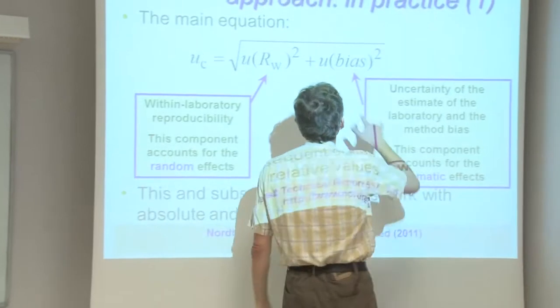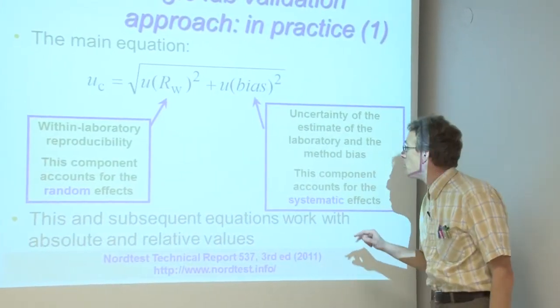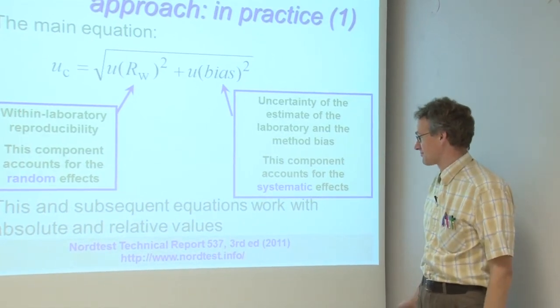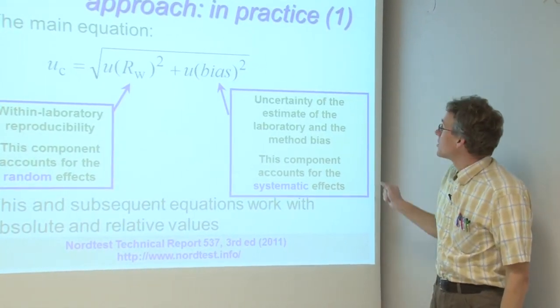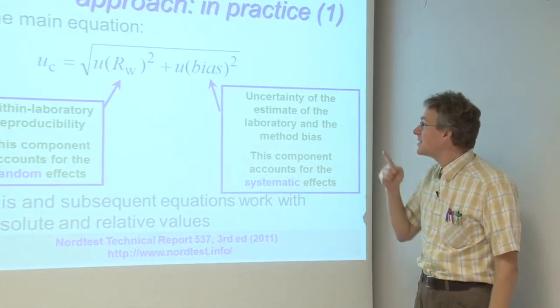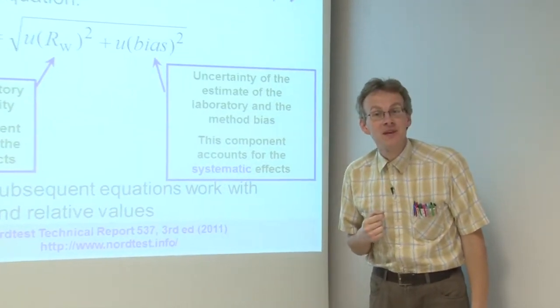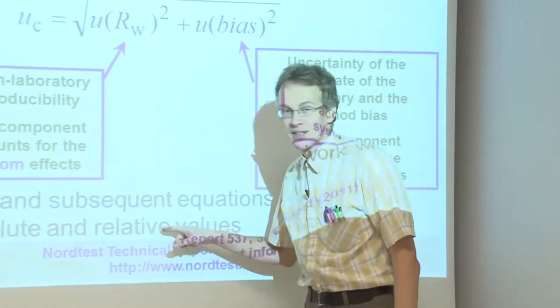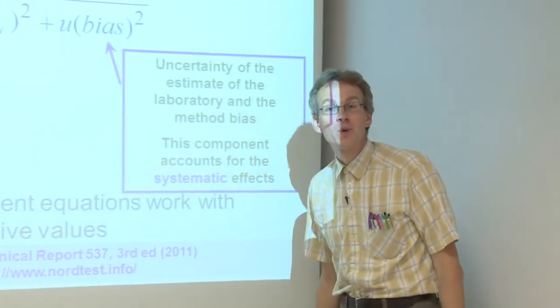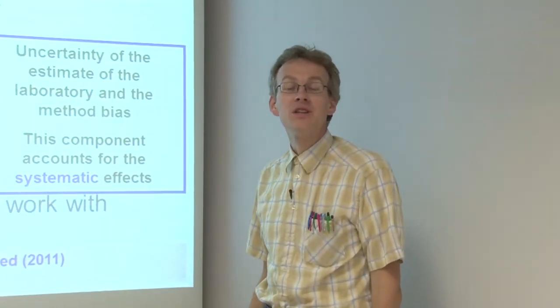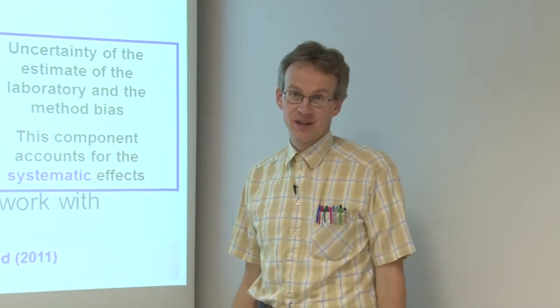Secondly, the U-bias takes into account the possible systematic effects in the long term. It is important to note that this equation can be used both with absolute and with relative values, and whether we use absolute or relative values must be determined based on the concrete situation.